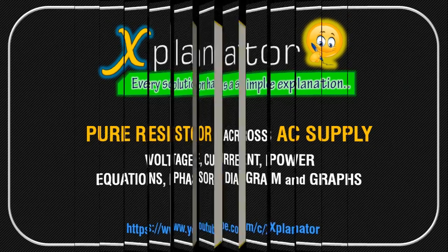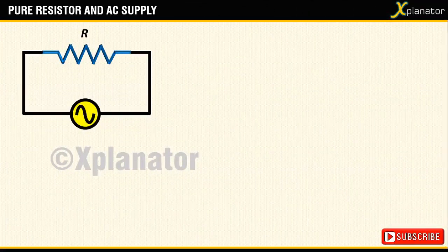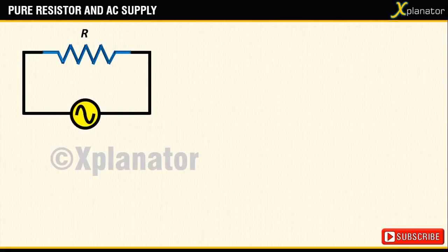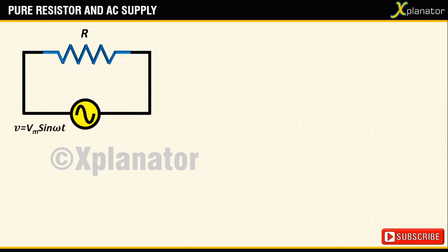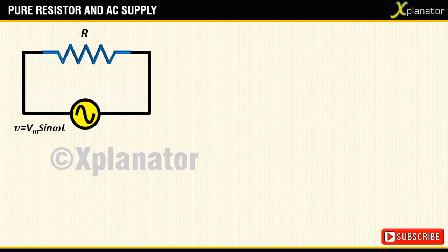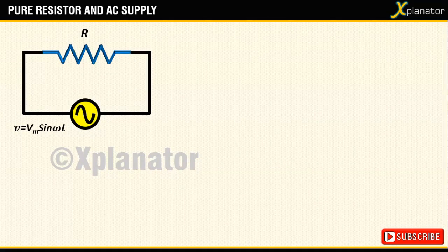To begin with, consider a pure resistor connected across an AC supply. The alternating voltage is denoted by equation v equals vm sine of omega t. Because the circuit is closed, there will be a flow of current in the circuit.